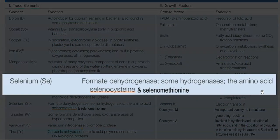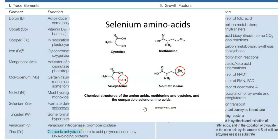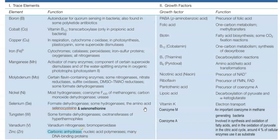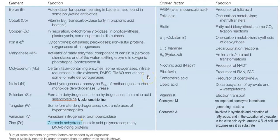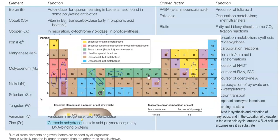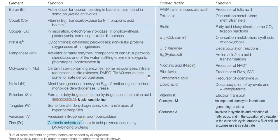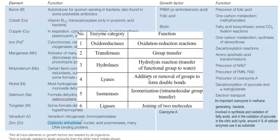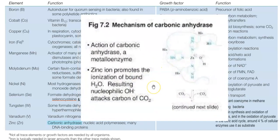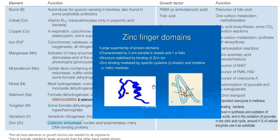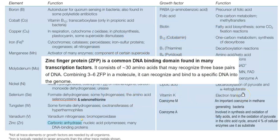Selenium is essentially required for synthesis of two amino acids — selenocysteine and selenomethionine — and plays a role in formate dehydrogenase and hydrogenase activity. Tungsten is found associated with formate dehydrogenases and oxotransferases of certain hyperthermophilic organisms. Vanadium is required for nitrogenase — in the absence of molybdenum, vanadium may have a substitutional role in nitrogenase activation — and is also associated with bromoperoxidase enzyme. Zinc is an important microelement associated with all six classes of enzymes, playing major roles in carbonic anhydrase, nucleic acid polymerases, and DNA-binding or zinc finger proteins.